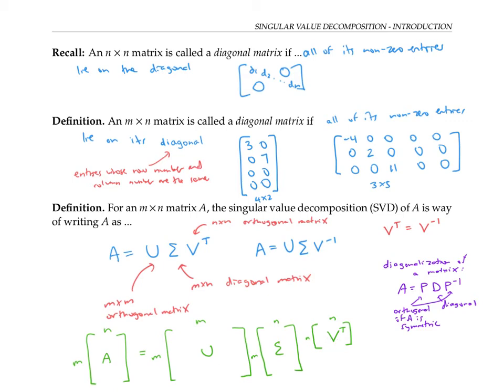A singular value decomposition has a lot of the same power as a diagonalization does, namely the power to write a matrix A in terms of a much simpler diagonal matrix, which is why it has important applications as we'll see in future videos or in class. For now, let's look at an example of a matrix and its singular value decomposition.